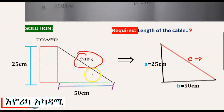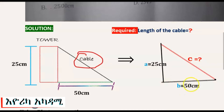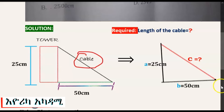Here are three body diagrams. We are going to need a 50 cm ground distance. This is the ground distance of 50 cm. We are going to find the length of the cable.